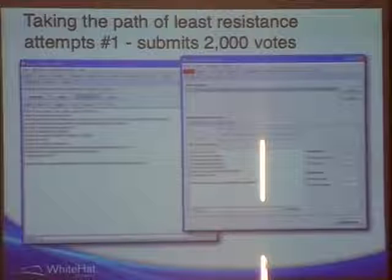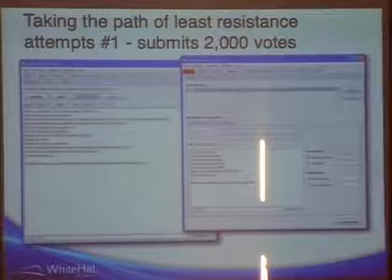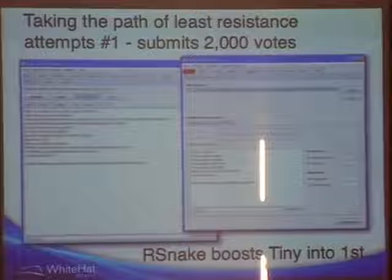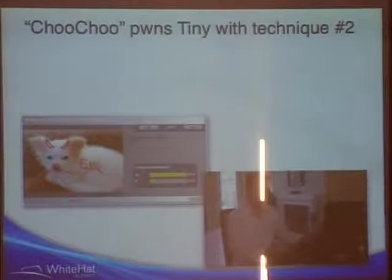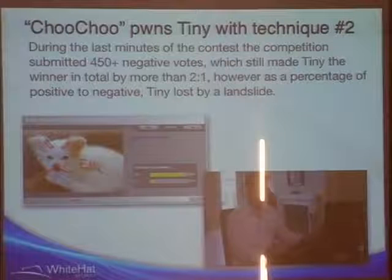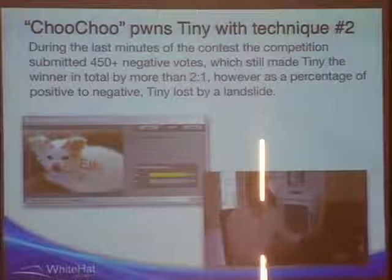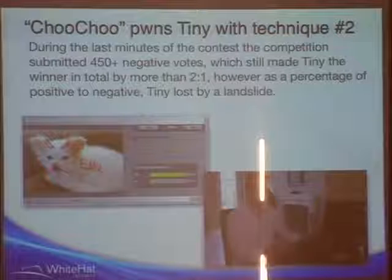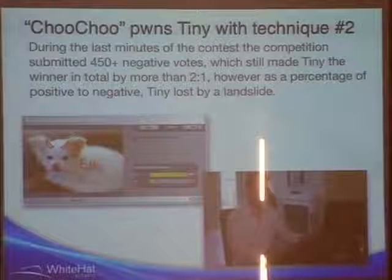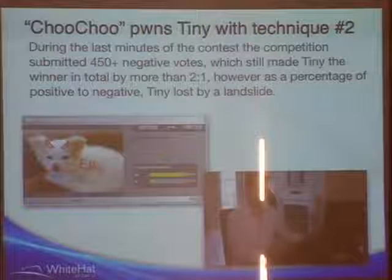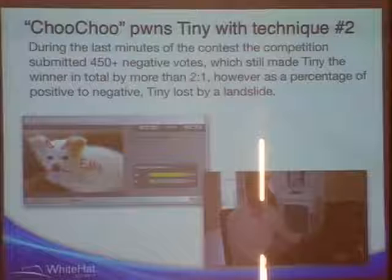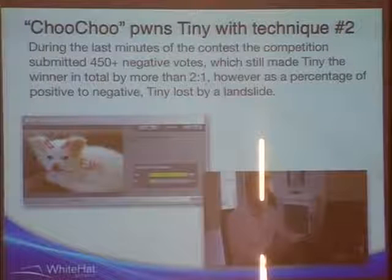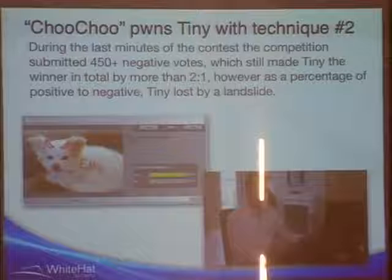He logs off feeling good about it, but when the contest ends, a dog named Choo-Choo comes out of nowhere and totally pwns Tiny with technique number two — casting a bunch of negative votes towards Tiny. This kind of shows where web security has gotten to: one of the better web hackers in the world couldn't easily win an online polling contest for chihuahuas in Austin.